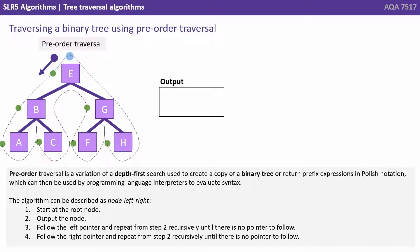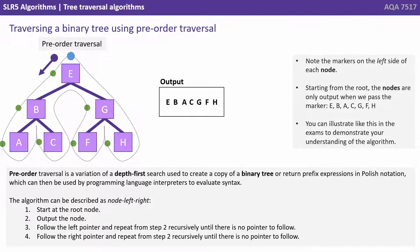Pre-order traversal is a variation of a depth search used to create a copy of a binary tree, or to return prefix expressions in Polish notation, which can then be used by programming language interpreters to evaluate syntax. Note that with pre-order traversal, we put the little green markers on the left side of each node. The algorithm can be described as a node-left-right traversal. We start at the root node, output the node, follow the left pointer and repeat recursively until there's no pointer to follow, then follow the right pointer and repeat recursively. Doing this, we write out each node as we pass the green marker and get E-B-A-C-G-F-H. You can illustrate this in your exam by following around in pencil and marking when you're outputting each node.